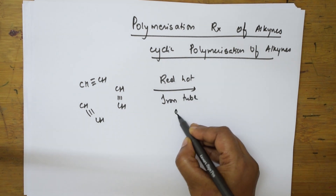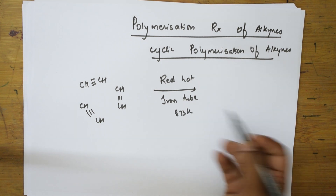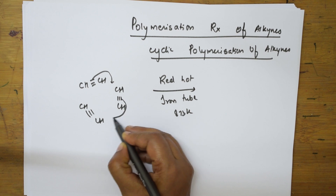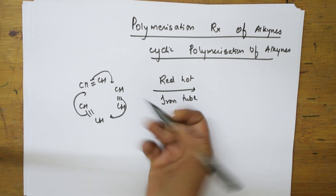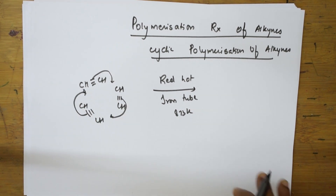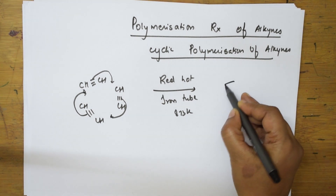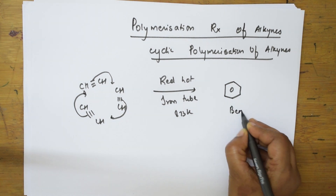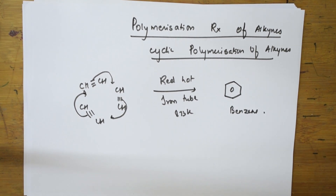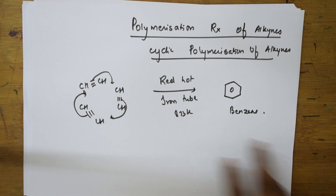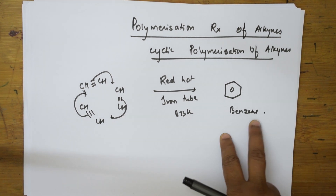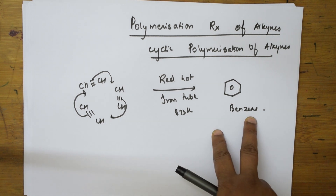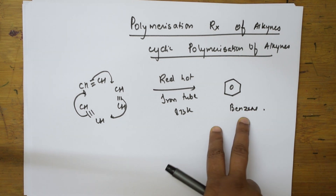At a temperature of 873 Kelvin, the bonds shift — this bond shifts here, this bond shifts here, this bond shifts here — and together they form a cyclic structure, that is benzene. Monomers are combining together to form polymers; this is polymerization. It started as a straight chain and has formed a cyclic structure, hence it is a cyclic polymerization reaction.